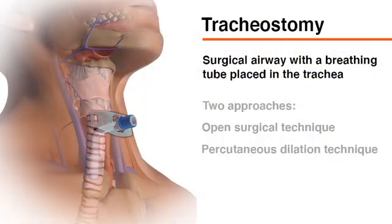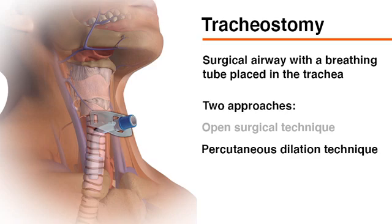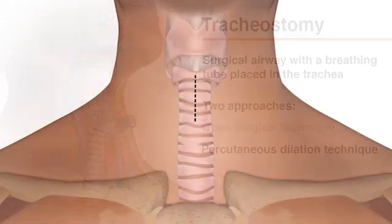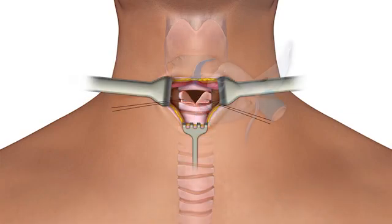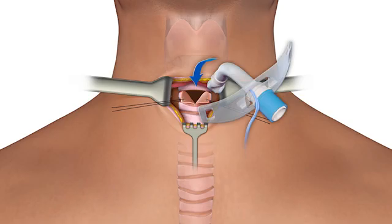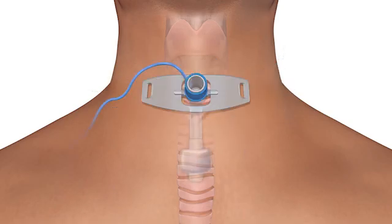A tracheostomy is a surgically created airway that is kept open with a breathing tube or tracheostomy tube. The tube is inserted directly into the trachea through an incision in the neck. A tracheostomy can be created with an open surgical technique or a percutaneous dilation technique, and can take place in the operating room or at the patient's bedside. The open technique involves dissection of the anterior pre-tracheal tissue and insertion of a tracheostomy tube into the trachea under direct visualization.